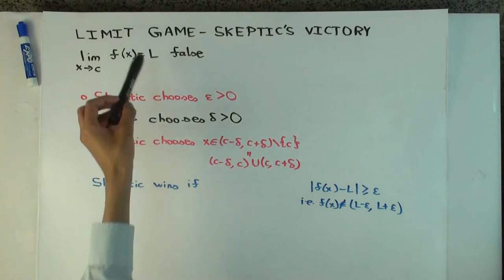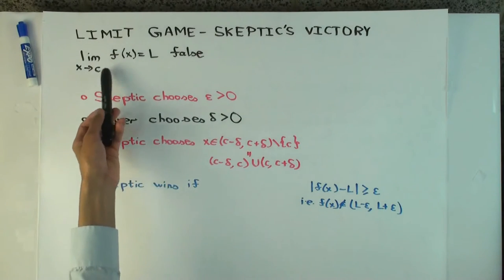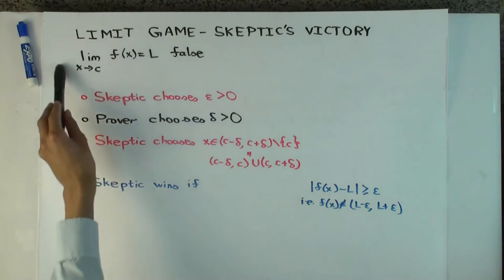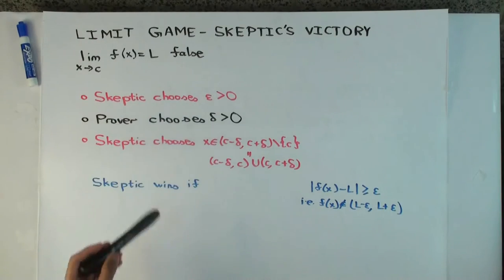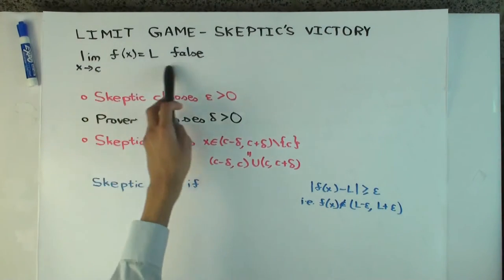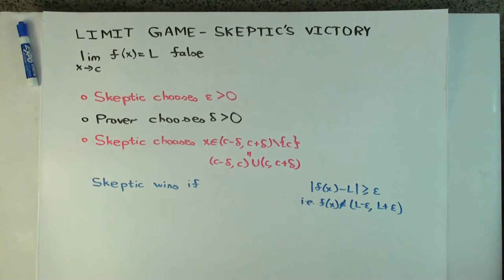So let me first remind you of the limit game, because that's a very nice way of thinking about what it means for it to be true and false. So what does the limit game say? It's a game between two players, a prover and a skeptic. What's the goal of the prover? To show this is right, to show that this is true. And the skeptic is trying to show that this is false, or at least trying to come up with the strongest evidence to suggest that this is false.